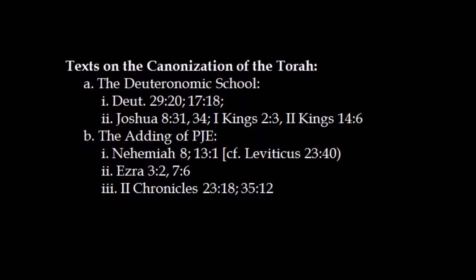In the book of Joshua, chapter 8, verse 31, describing the ceremony the Israelites are supposed to perform when entering the land — going onto the two mountains near Nablus for the cursing and blessing ceremony — it says 'as is written in the book of the teaching of Moses.' Referring to the book of Deuteronomy as the Torah Mosheh is characteristic of how Deuteronomy is portrayed.